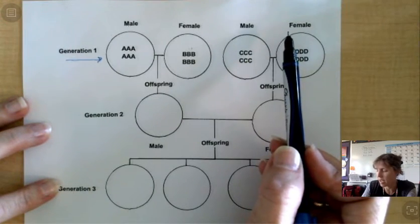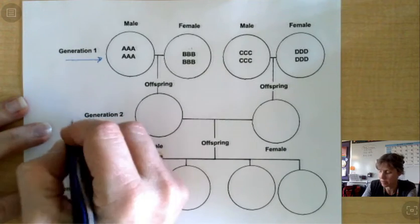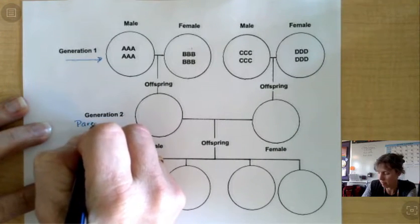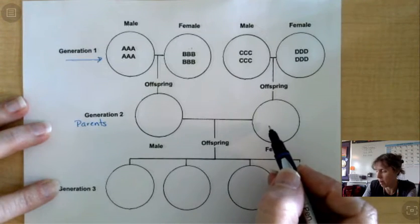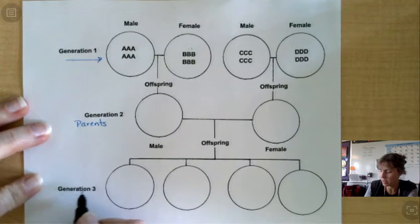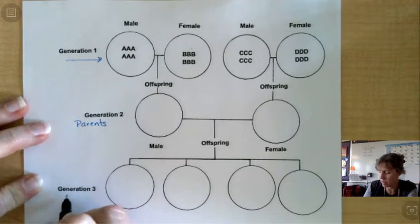And then their offspring are parents, right? So we have Dad and we have Mom. And this Generation 3, these are the children.